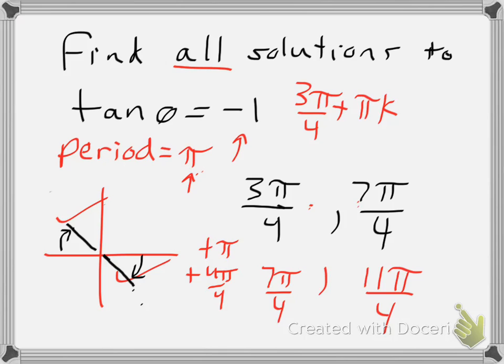And likewise, we'll do the same thing for 7 pi over 4. I'll add pi k. And that accounts for all iterations of the solution of 7 pi over 4.